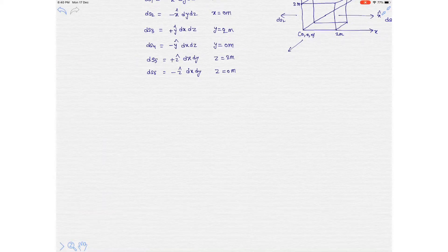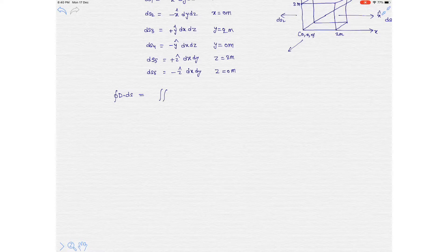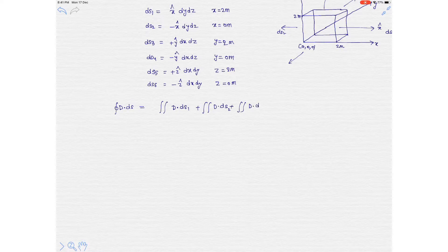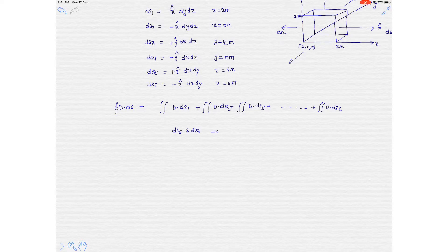Now let's take the left side of the divergence theorem, which is the closed surface integral of the vector field D. This can be decomposed into various differential surface integrals: D·ds1, D·ds2, D·ds3, and so on up to D·ds6. However, ds5 and ds6 point in the positive and negative z directions, but there is no z-direction term in the vector field D, so we can simply make those two integrals equal to zero.